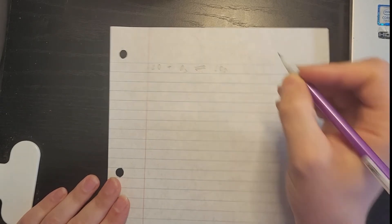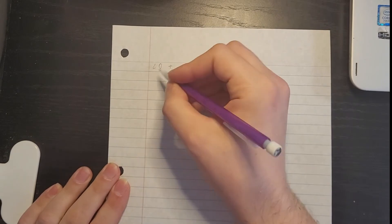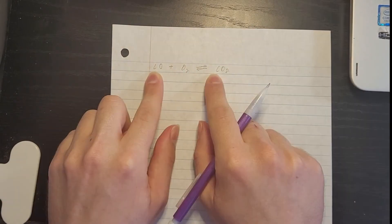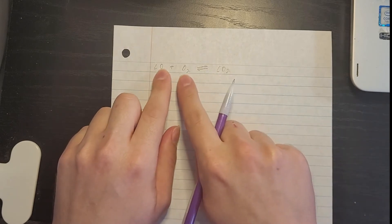Now to balance this equation, you have to count how many C's there are first and you have to match up the number of O's to each side.